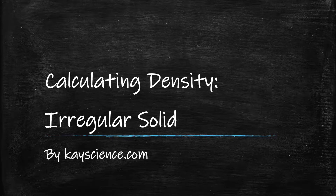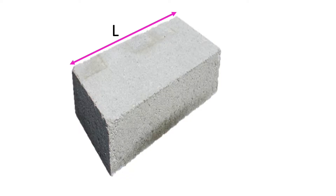Calculating the density of an irregular solid by kscience.com. This here is an irregular solid. You can't work out the volume of this solid by using the equation length times width times height. So I'm going to show you how to calculate the volume of this solid and then use the density equation to work out the density for this solid.